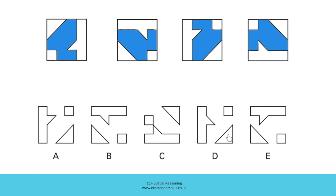In option D, for the shapes to be positioned like this, the triangular section or point of this longer shape would need to be in this orientation — and in D, it's the opposite way round, so D is incorrect too. In option E, for the longer shape to be here, you can see once again the triangular section is incorrect; it should be positioned like this. So E cannot be the right answer either. It means then that option A was indeed the correct answer here. This collection of shapes could be added to the original shape in order to create the target shape, like a jigsaw puzzle.